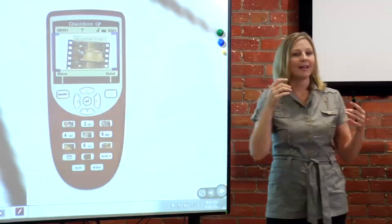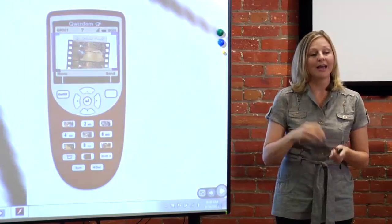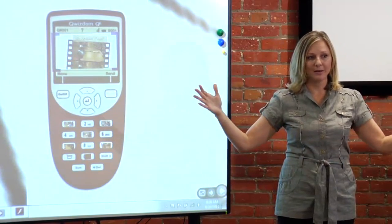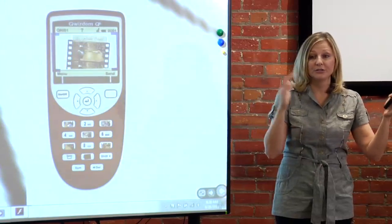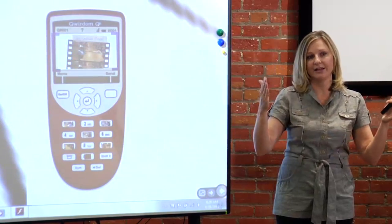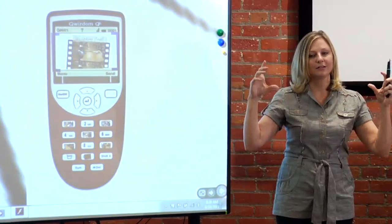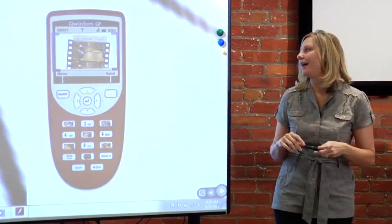I post the question. They click in their answer. I hit a button and a graph comes up to display it on the board. Percentage of the class that got it right and percentage that got it wrong. And you can do different graphs. You can do the pie charts, the bars, and things like that.